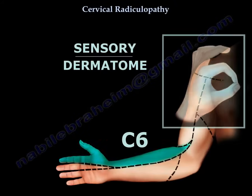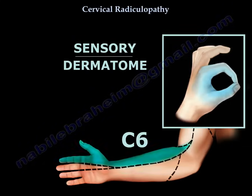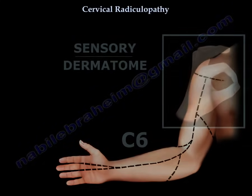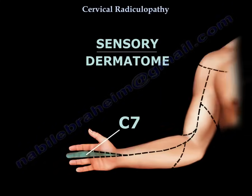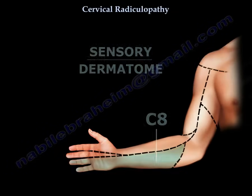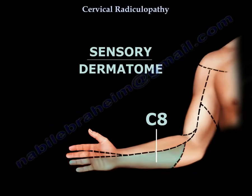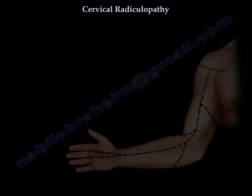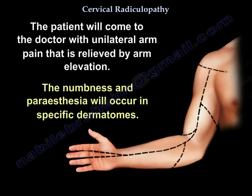Looking at the dermatomes: C6 corresponds to the index finger side, C7 is the middle finger, and the fifth finger corresponds to C8. Clinically, the patient will present with unilateral arm pain relieved by arm elevation, and numbness and paresthesia in specific dermatomes.